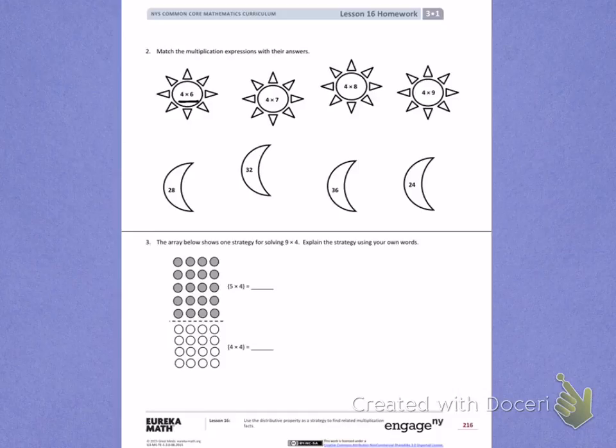So I have 4, 8, 12, 16, 20, 24. 4 times 6 is 24, so I'm going to match it to the moon on the end.